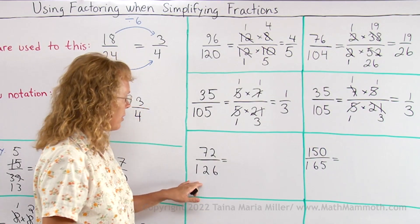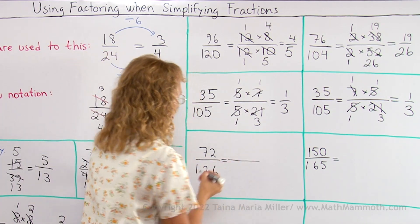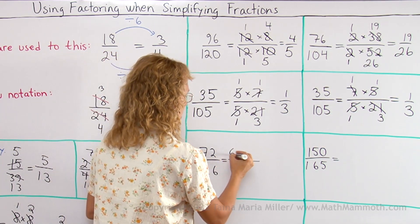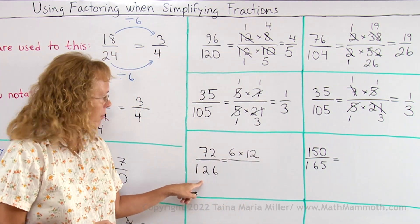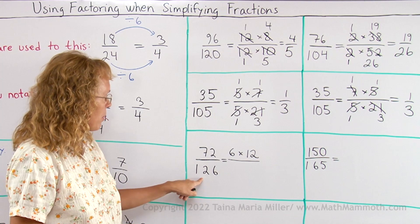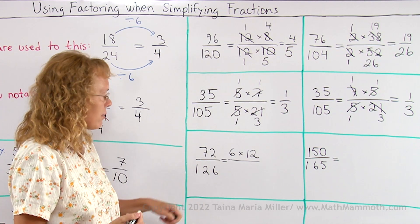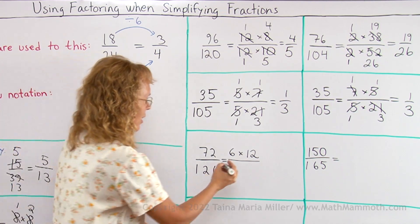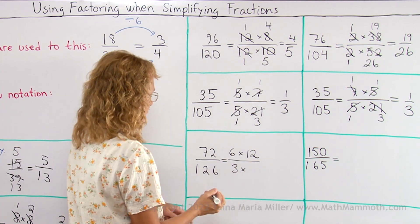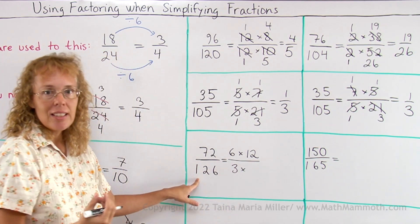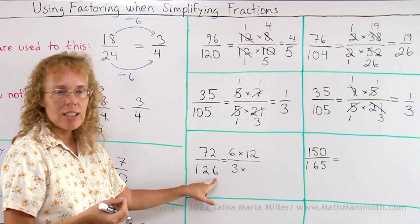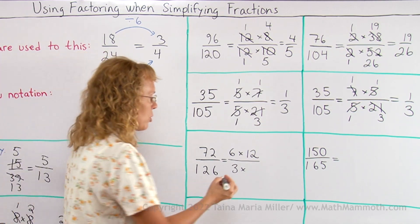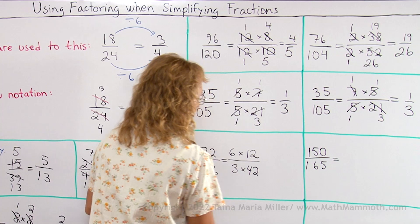Next one. 72 would be 6 times 12. This one here is divisible by many numbers. For example, it's divisible by 3. Let's say I write it as 3 times—120 divided by 3 is 40, and then 6 divided by 3 is 2, so 42 in total.